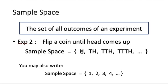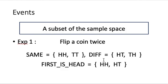But then, equivalently, you may also write the sample space as 1, 2, 3, 4, and so on, representing the total number of flips. So H and 1 represent the same thing; TH and 2 represent the same thing, and so on. Now, what is meant by events? Events is a subset of the sample space.